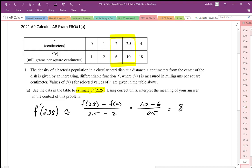Now it's important to make sure we understand the units of this. This is the rate of change of the density. So this is in terms of milligrams per centimeter squared per centimeter of radius.